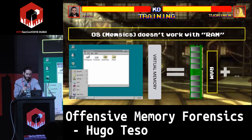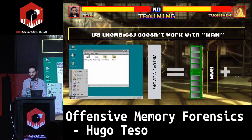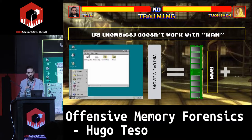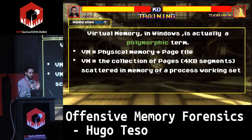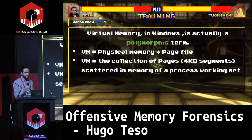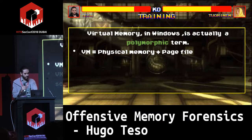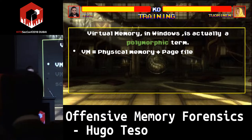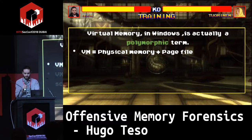I stayed two or three weeks reading about virtual memory, until I found a Microsoft website that explained something very important. In Windows environments, the term 'virtual memory' is actually a polymorphic term — it has more than one meaning depending on the context and who is talking. One meaning is that virtual memory is physical memory plus something called a page file.